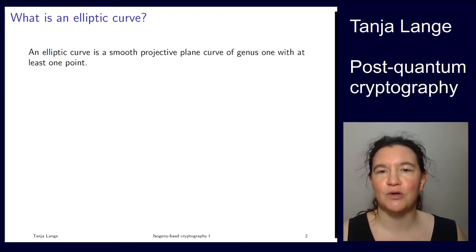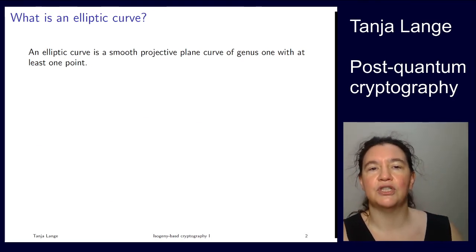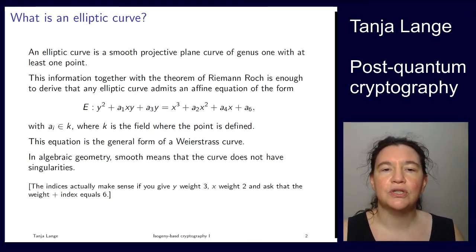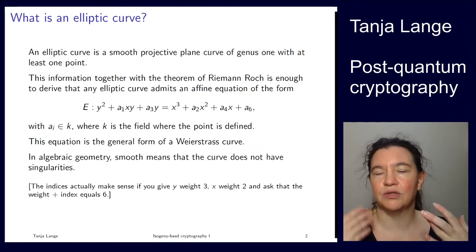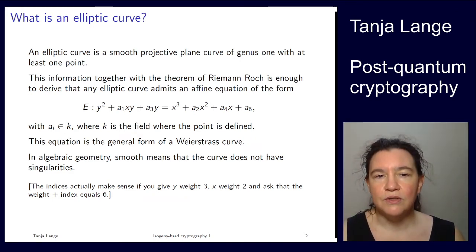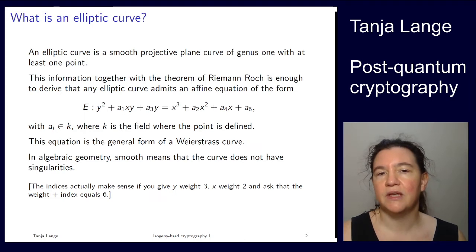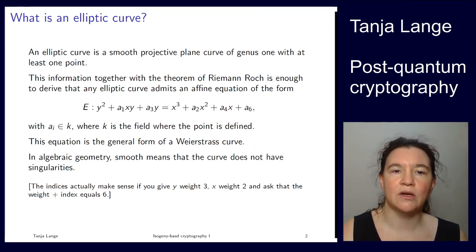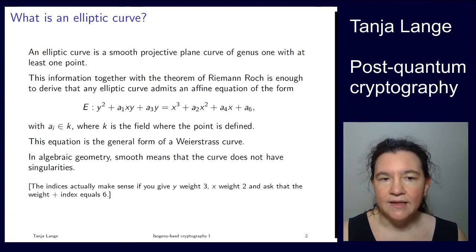Now that is absolutely correct and as many jokes go, absolutely useless. We like to work with elliptic curves in cryptography where we can represent them and write down the equation. From this definition we can use the Riemann-Roch theorem which gives us an explicit form of this elliptic curve. It's monic in x cubed and y squared with some lower order terms. The coefficients make sense if you give x weight 2 and y weight 3, then the sum has weight 6. This is an elliptic curve provided that it's non-singular.